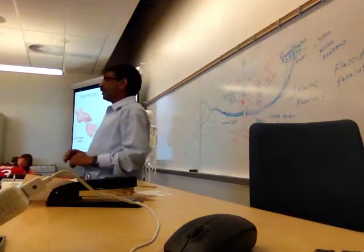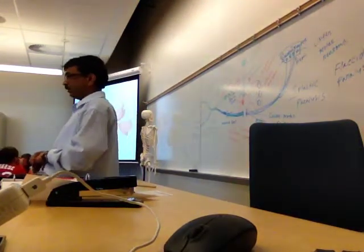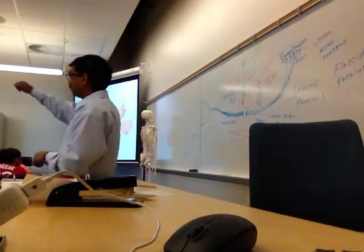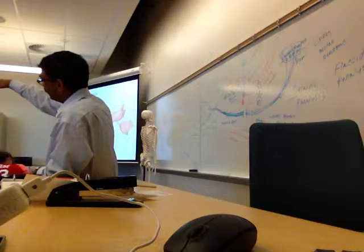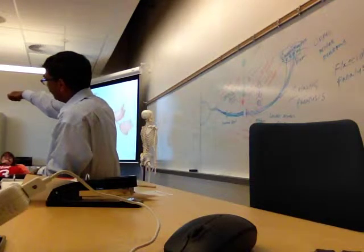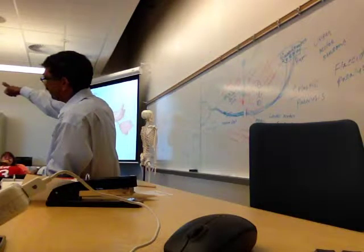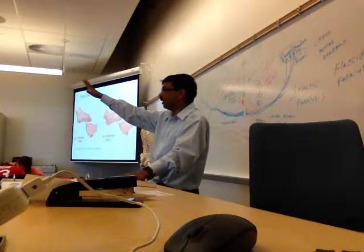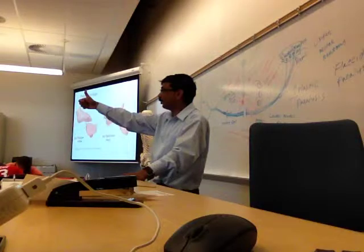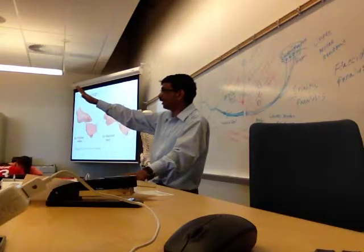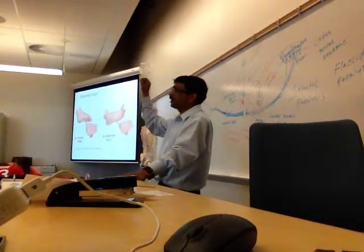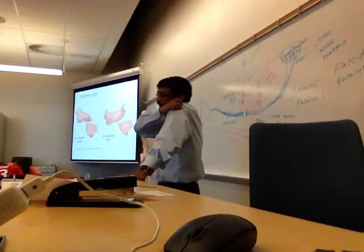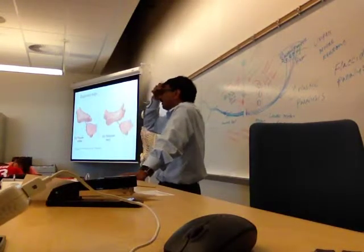If someone has a spinal cord or brain lesion or disease, instead of flexion of the toes, you may see extension of the big toe upward and fanning (spreading) of the other toes. This abnormal response indicates a possible motor neuron disorder. So the Babinski's test helps identify if someone has a motor neuron disorder.